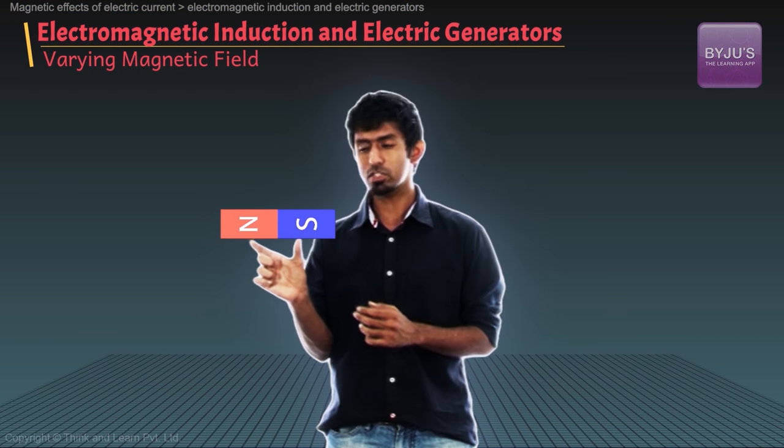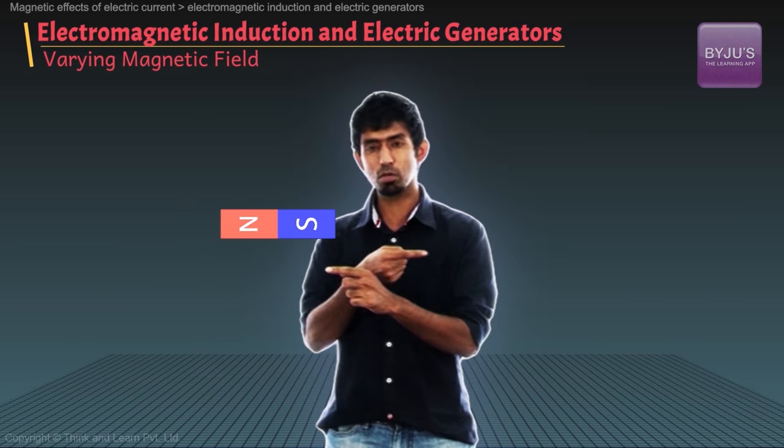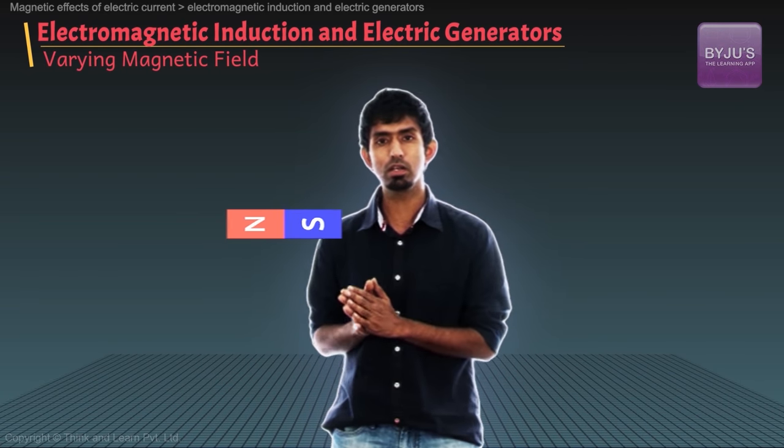Let me keep a bar magnet like this, such that the north pole points that way and the south pole points this way. So how is the magnetic field? That way.